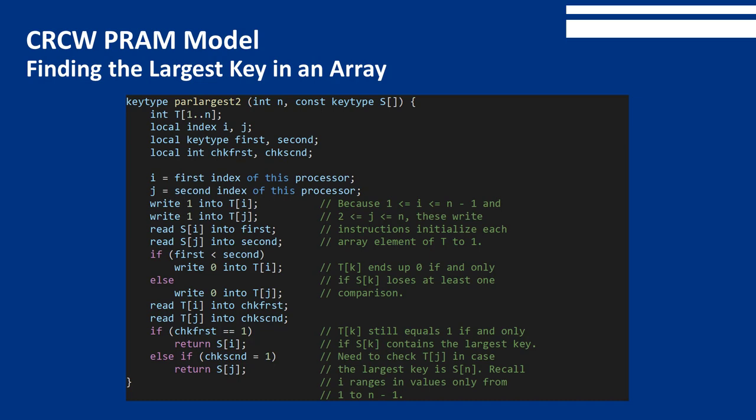This is quite impressive, because it means that we could find the largest of 1,000,000 keys in the same amount of time required to find the largest of only 10 keys. However, this optimal time complexity has been bought at the expense of quadratic processor complexity — we would need about 1,000,000 squared over 2 processors to find the largest of 1,000,000 keys.